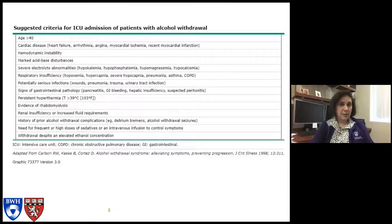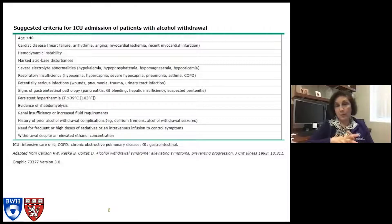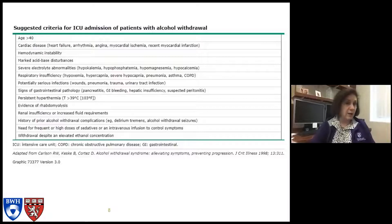This is another table from UpToDate giving suggestions on which patients with alcohol withdrawal should go to the ICU — some criteria for ICU admission. This is a guide, and every institution is different. You should think about what your own institution's floor can handle versus the ICU. But most things listed here are conditions that would make us think the patient might do better in a closely monitored situation such as an intensive care unit.